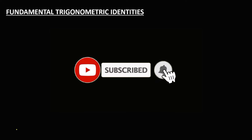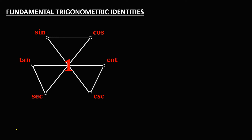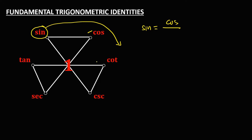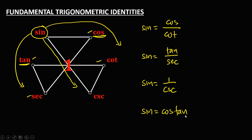Let's find the different fundamental trigonometric identities using this figure. For sine, on this area, we have sine equals cosine over cotangent. Another identity for sine on this area is tangent over secant. Also for sine on this area, that's 1 over cosecant. And the last one for sine is the product of these two functions: cosine times tangent.